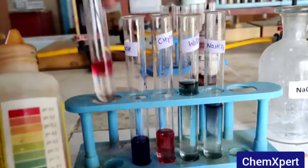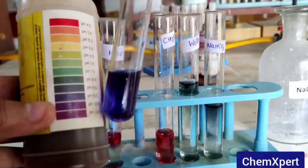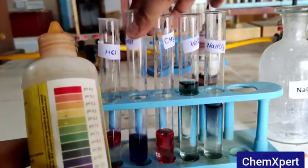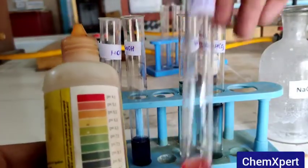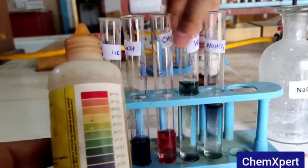We can easily find out the pH of the given solution and also find out the nature of the solution. For example, if it is a weak acid, it will give slightly red or orange color.